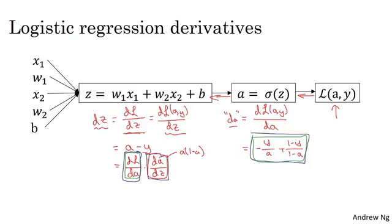and multiply them, you can show that the equation simplifies to a - y. So that's how you derive it, and this is really the chain rule that I briefly alluded to before. Feel free to go through that calculation yourself if you are knowledgeable in calculus. But if you aren't, all you need to know is that you can compute dz as a - y, and I've already done that calculus for you.